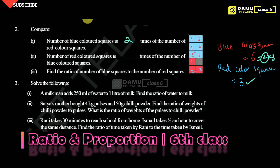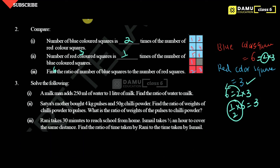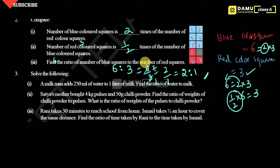Number of red colored squares is dash times the number of blue colored tiles. Here, 6 equals 2 into 3. Shifting: 1 by 2 into 6 equals 3. So the number of red colored squares is 1 by 2 times the blue colored squares. Find the ratio of blue colored squares to red squares: 6 to 3 equals 6 by 3 equals 2 by 1 — that is 2 is to 1.